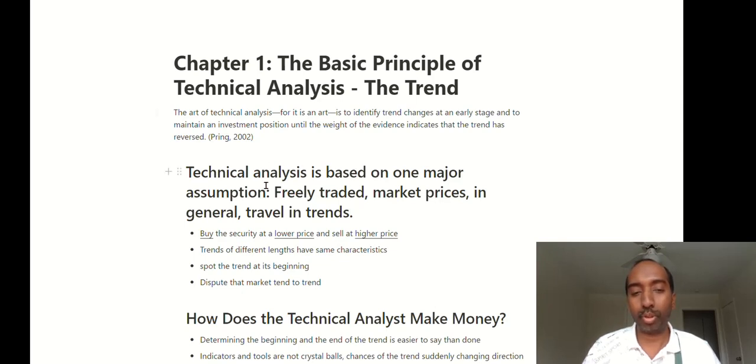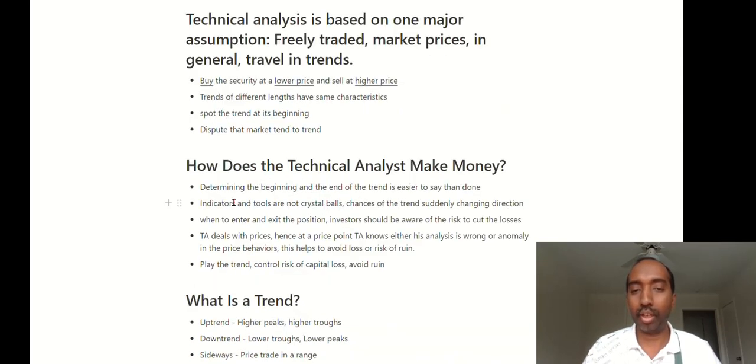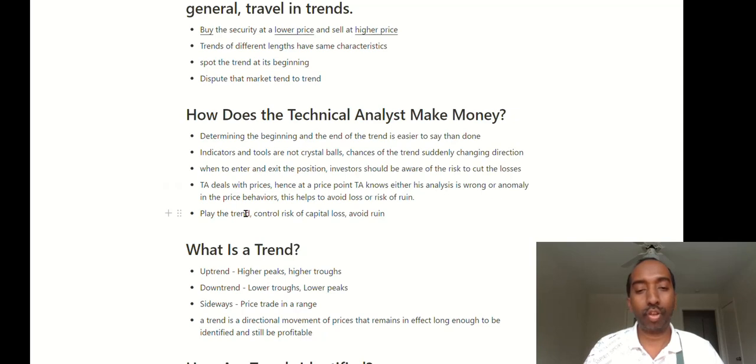Technical analysis is based on one major assumption: freely traded market prices in general prevalent trends. Buy the security at low price and sell at high price. I know it's easier said than done. But this is what theory says. We technical analysts strive to identify the trend at the earlier phase, get into the trend, and sell it at higher price. How does the trend and technical analysts make money? Determine the beginning and the end of the trend. Identify the beginning, hop in at the beginning, and get out at the end. Play the trend. Control risk of capital loss and avoid ruin.